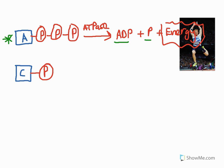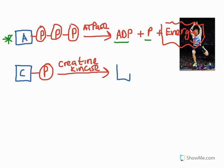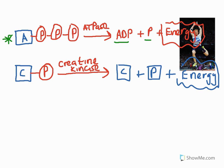Creatine phosphate has one creatine group with one phosphate group. We can break the bond between the creatine and phosphate in the presence of an enzyme called creatine kinase. In the presence of that enzyme, we release creatine plus our phosphate group plus energy. These are useful products, and because they are released, we call it an exothermic reaction.